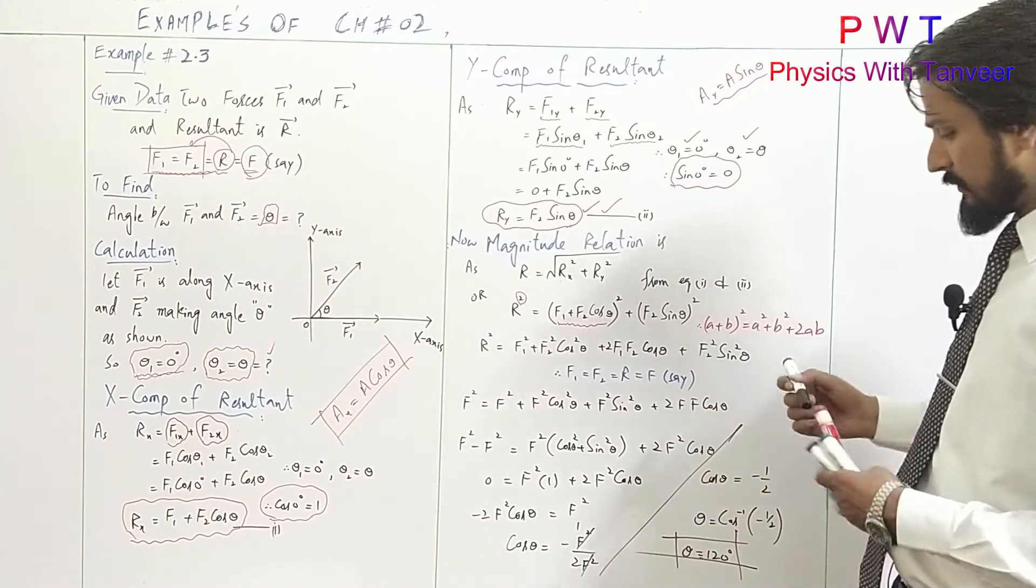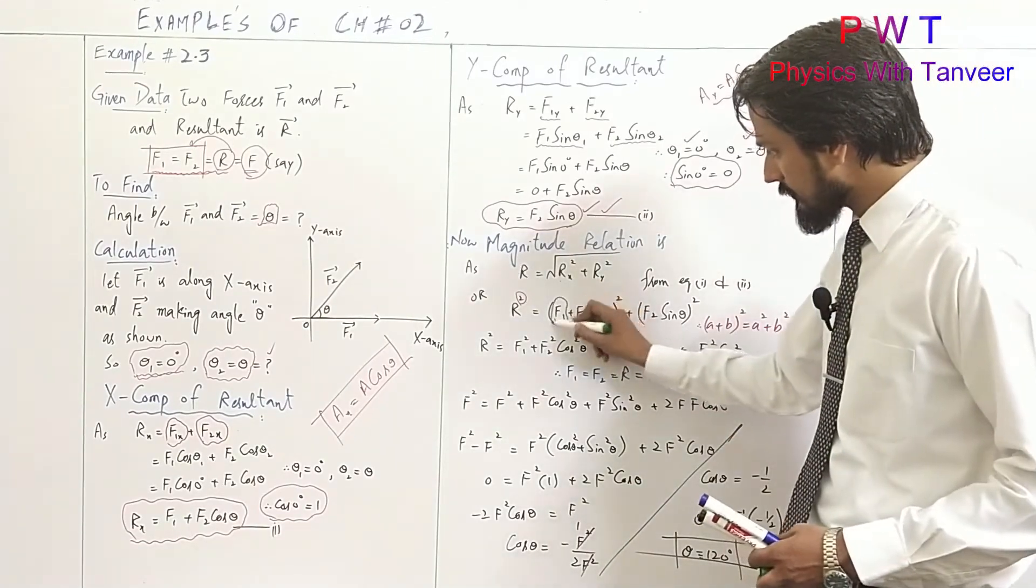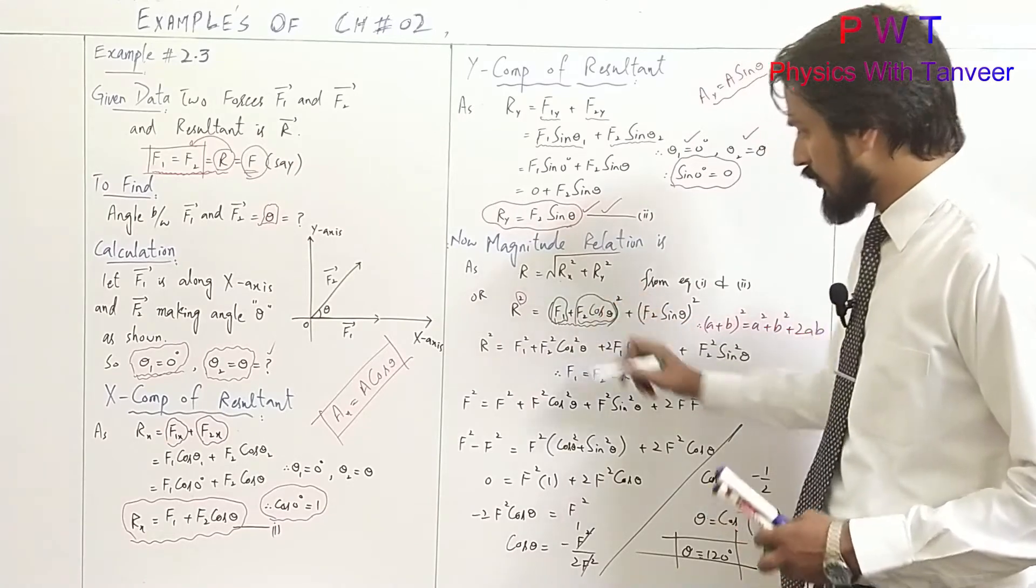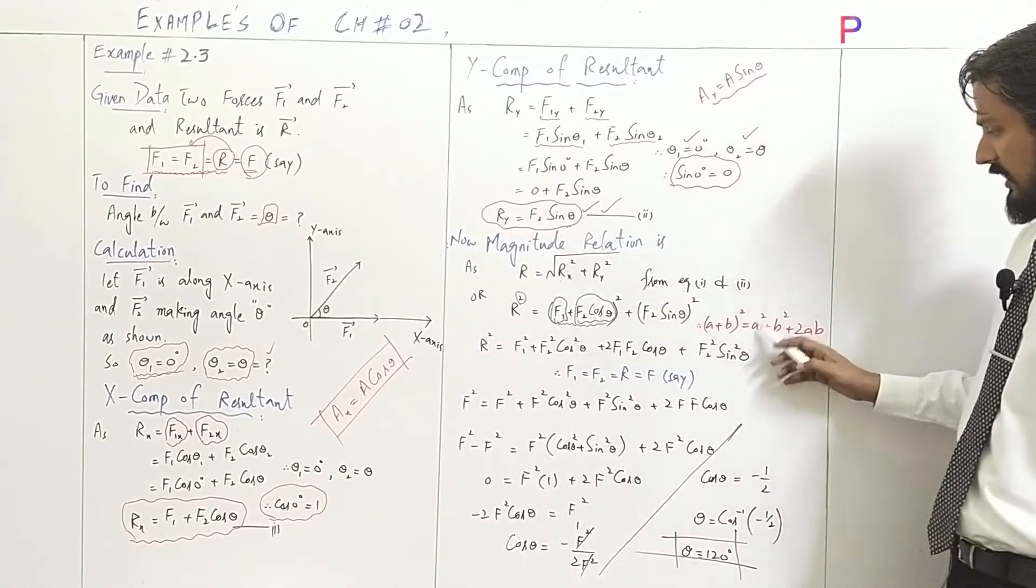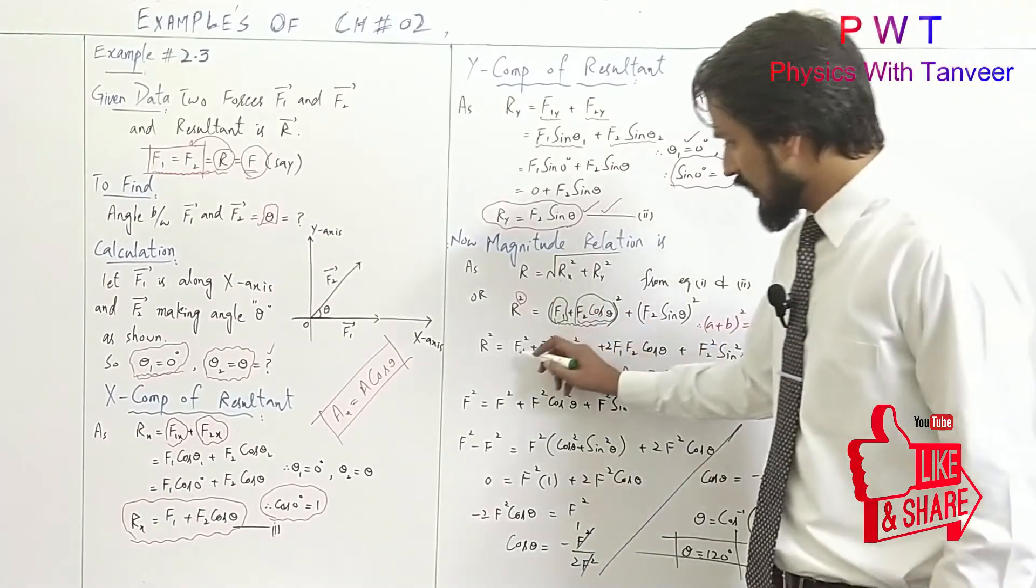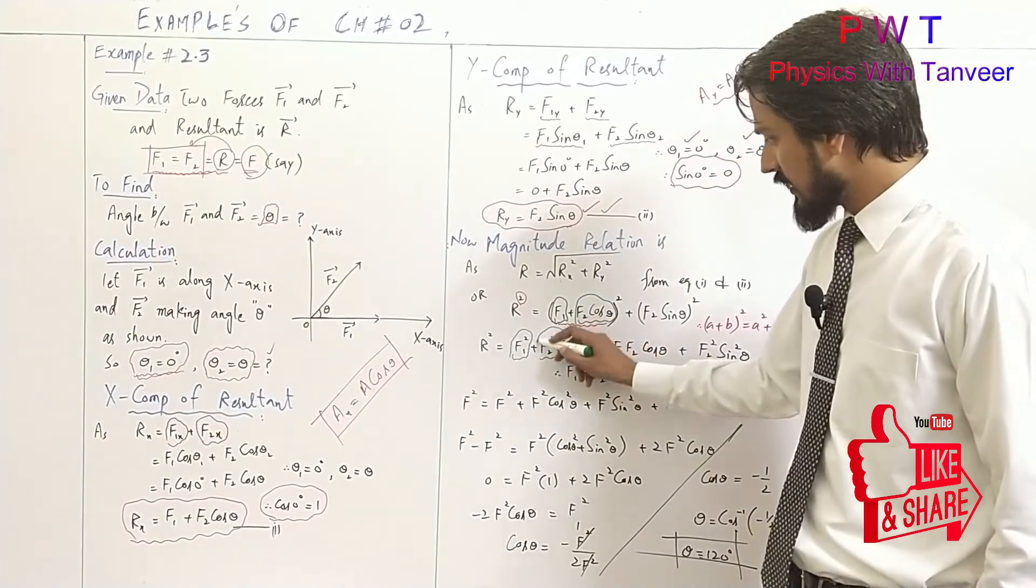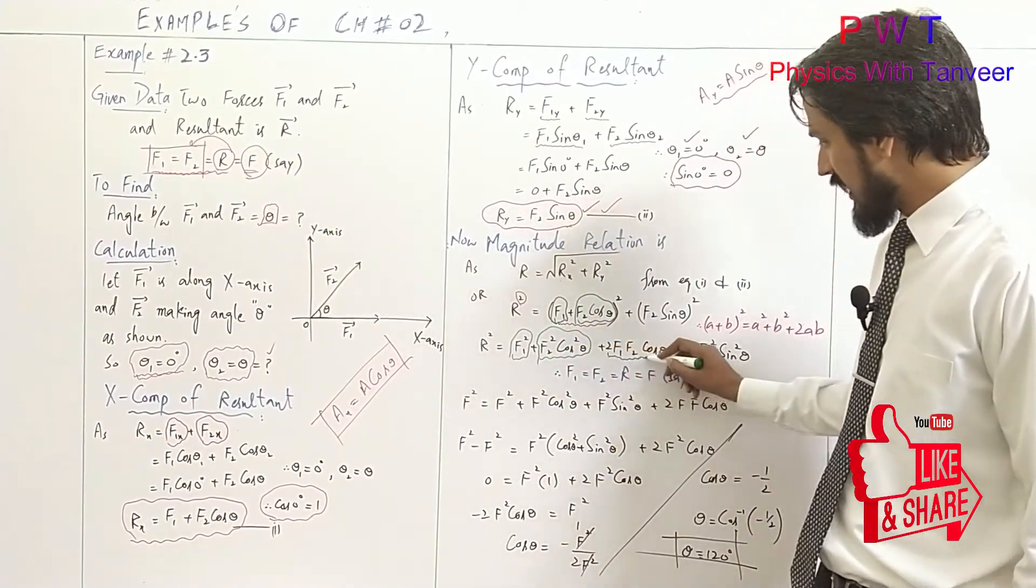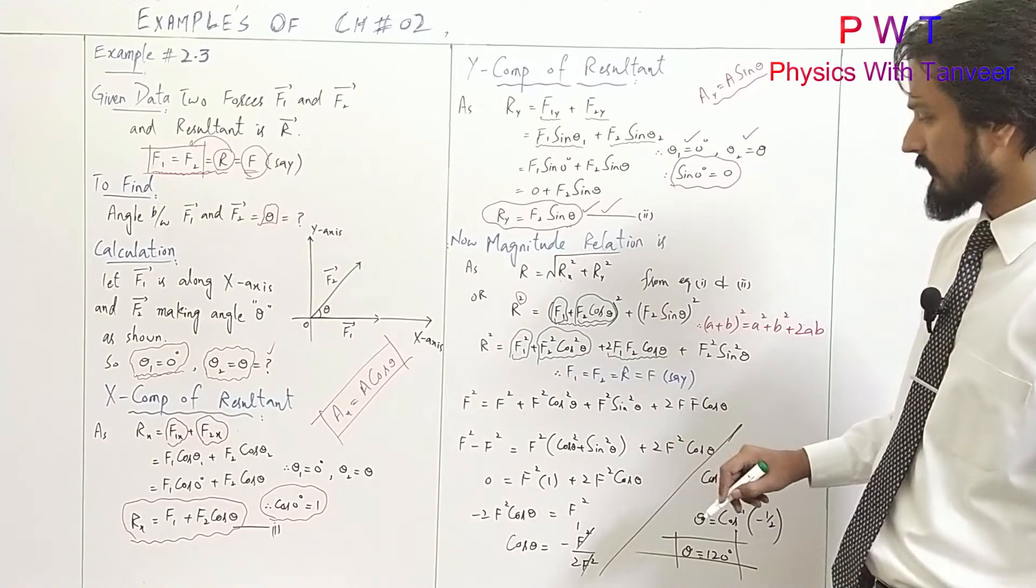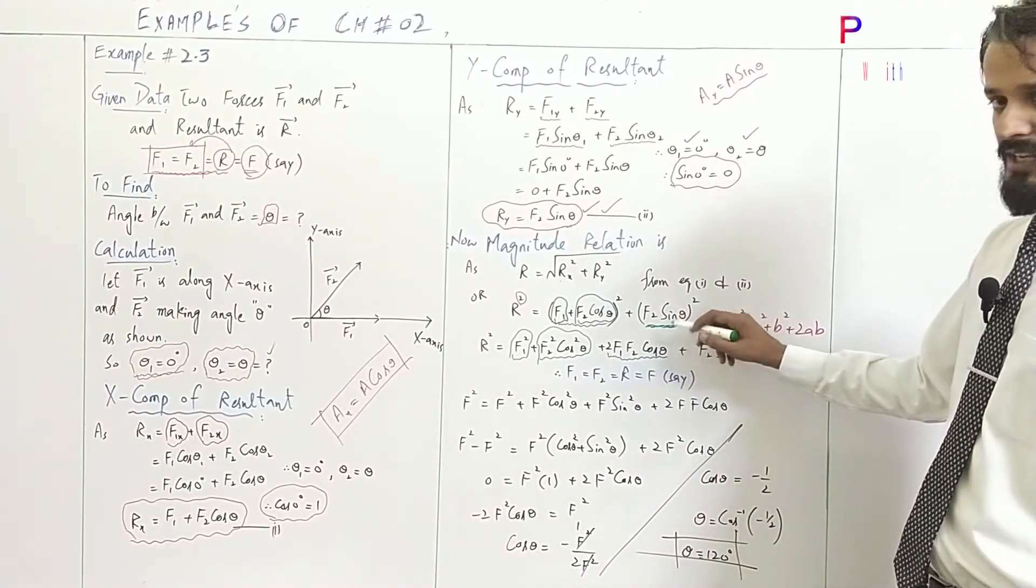The resultant magnitude uses the formula: this is A squared plus B squared. So we have F1 squared plus F2 cos theta squared plus F2 sin theta squared. F2 squared comes out, sine squared and cosine squared separate.